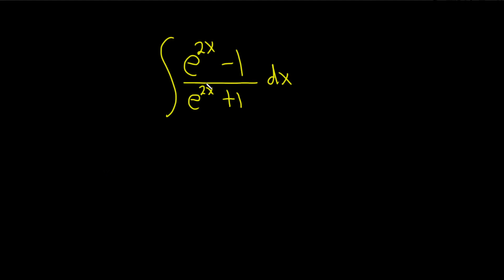In this problem, we have to integrate e to the 2x minus 1 over e to the 2x plus 1.